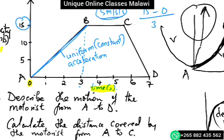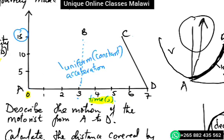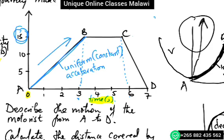But in section BC, the motorist maintains that speed. The velocity is 15 meters per second, maintained for 3 seconds. The speed doesn't increase; it's constant at 15 meters per second. This means zero acceleration.